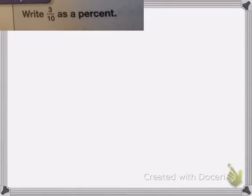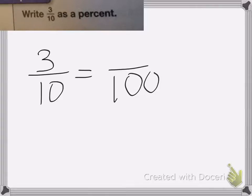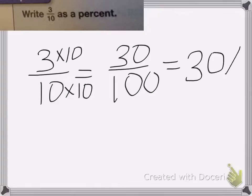This one is write 3 tenths as a percent. So I need to change 3 tenths into a fraction that has 100 as my denominator, so I can turn it into a percent. So I need to figure out 10 times what is 100? 10 times 10 is 100, so I need to multiply the top by 10 as well. 3 times 10 is 30. So I have 30 hundredths, so I can change that into 30%.